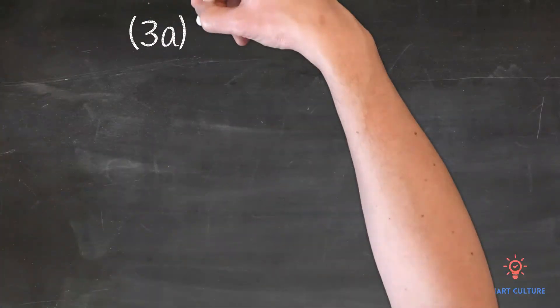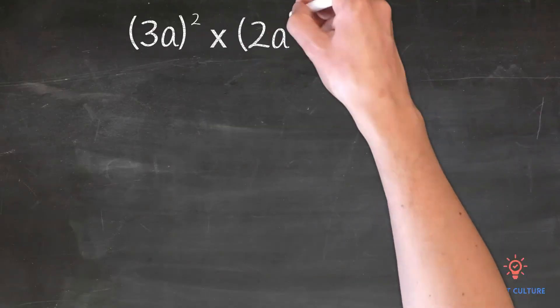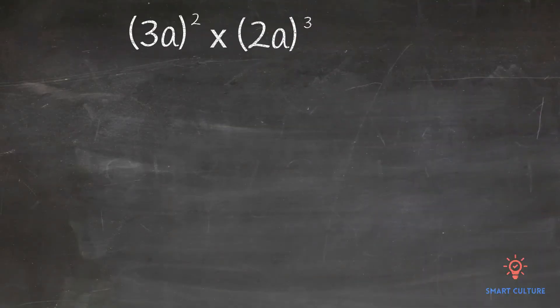So here we have 3a raised to the power of 2 times 2a raised to the power of 3. Remember, a power raised to a power is equal to the same base raised to the product of the exponents.